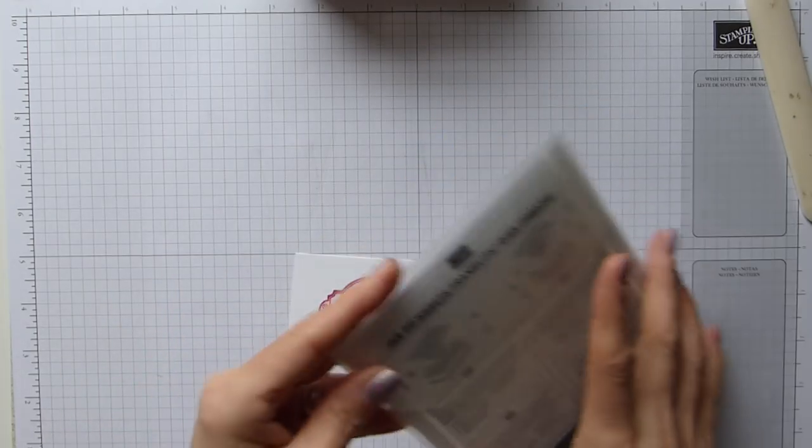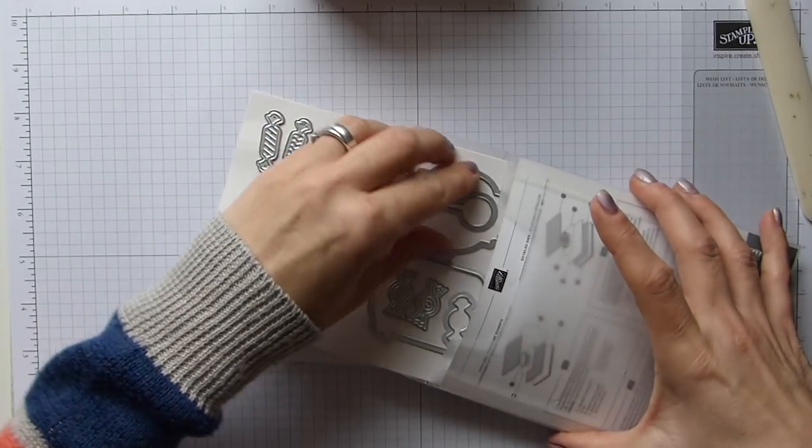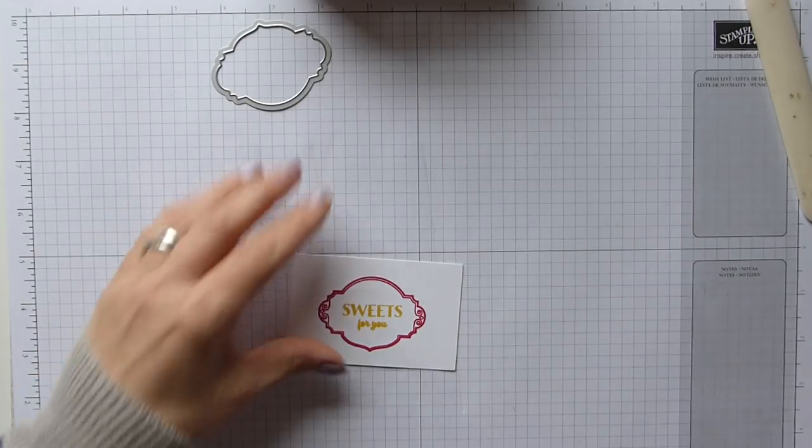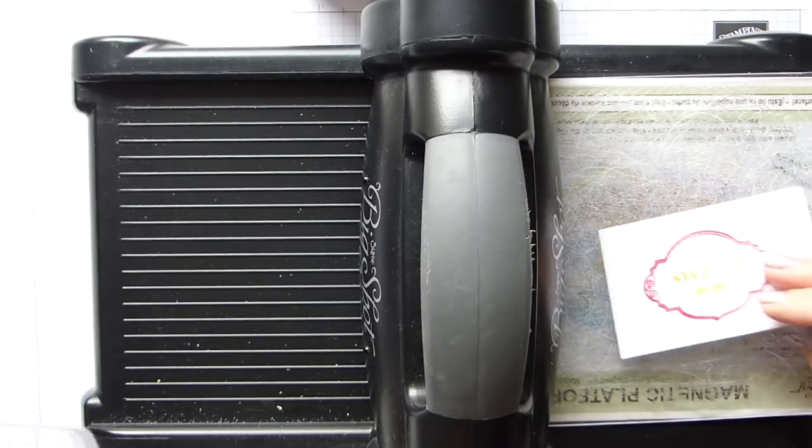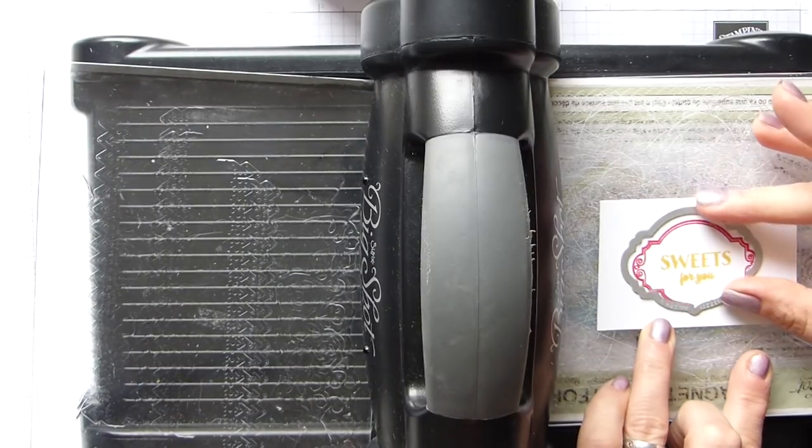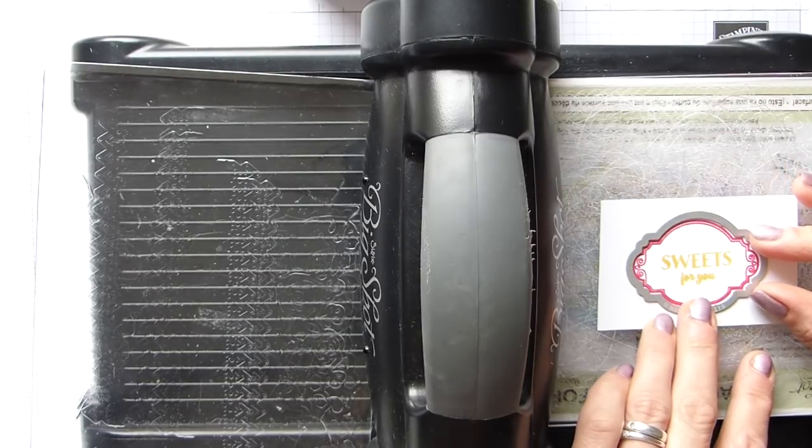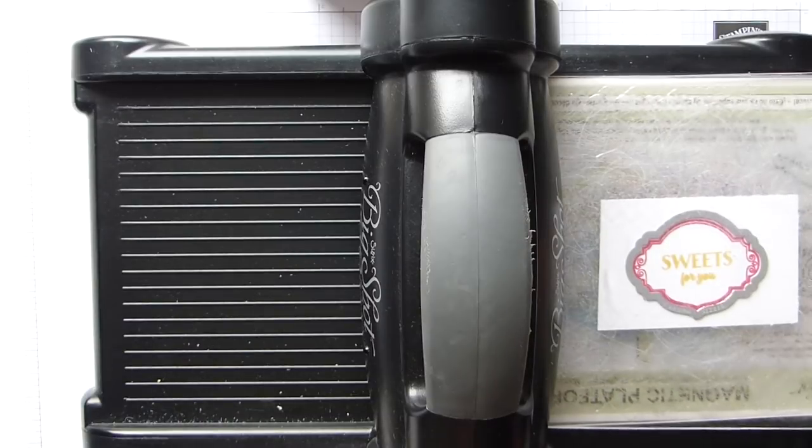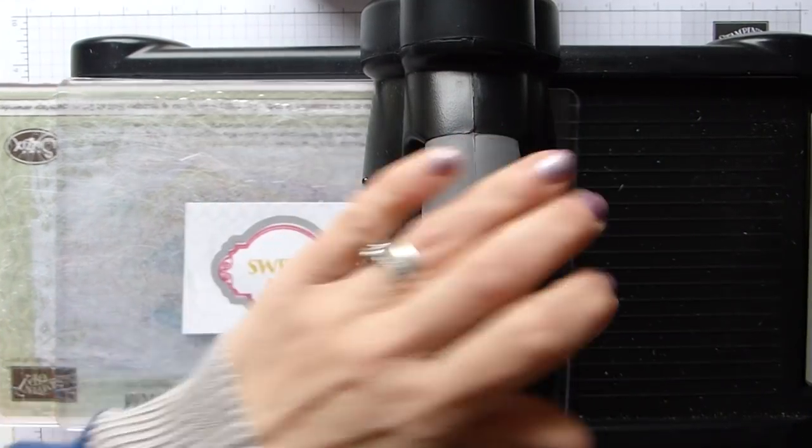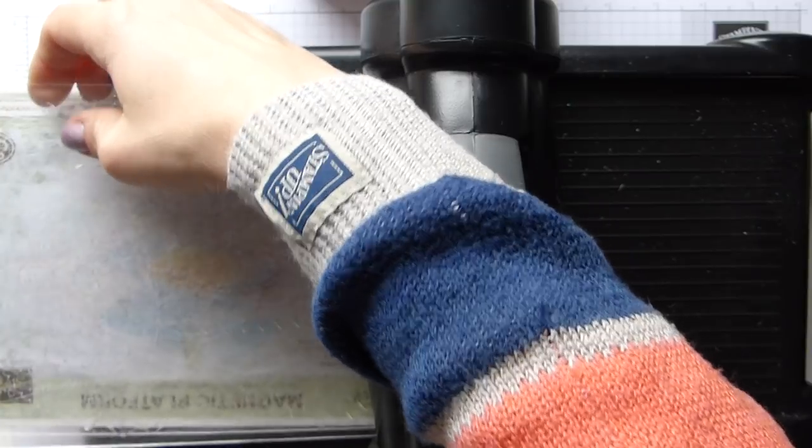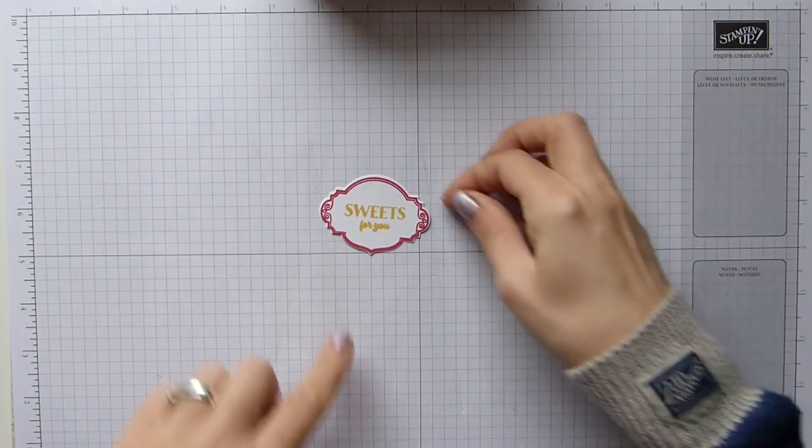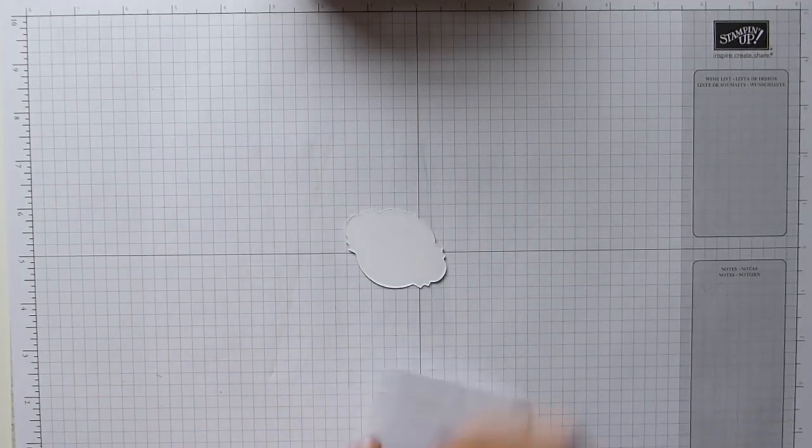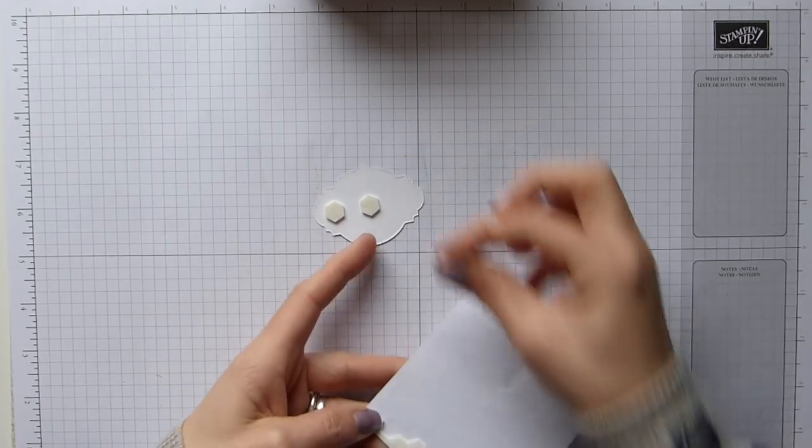Then I use my jar of Sweets thinlets for die cutting this bit out. So back in with my Big Shot. But obviously I don't need that this time. I just need my normal magnetic platform, which I'm going to pop on there. Obviously your die has the little point at the bottom too. So just line it up and run it through. Just take that out of the way.